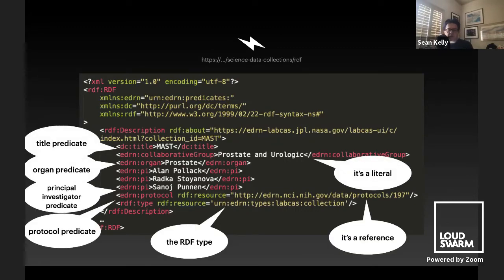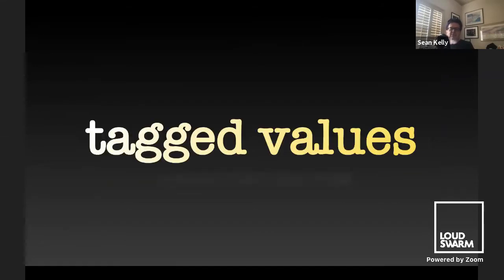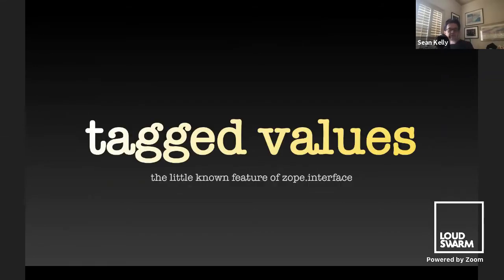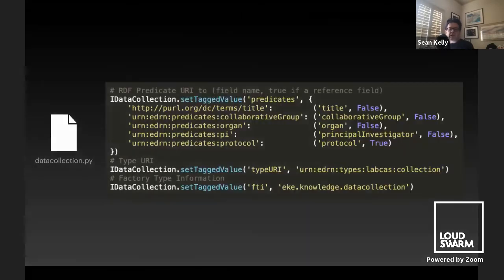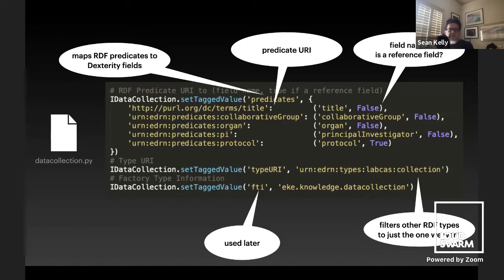We've got lots of predicates for things like the organ, the principal investigator, and so forth — some literal values, some references, and the RDF type. We need to map the RDF type onto a specific Dexterity custom content type, such as the data collection. The Zope schema fields of that content type are the various predicates. To go from an RDF predicate to a schema field, the secret is to use tagged values — a little-known feature of Zope.interface — to associate programmer-specific information like the predicate map.